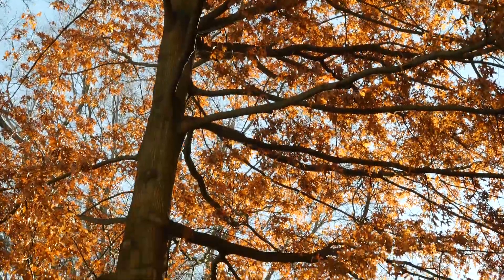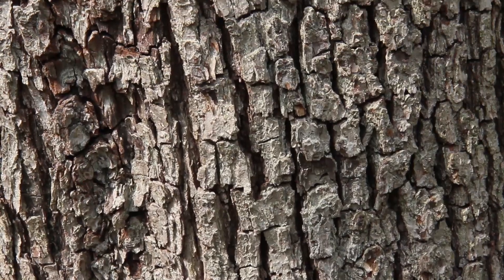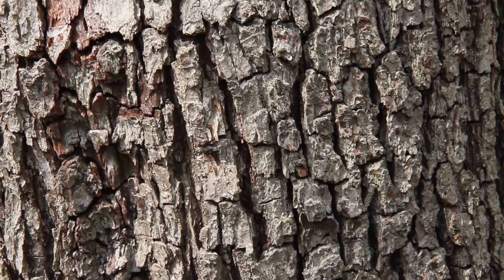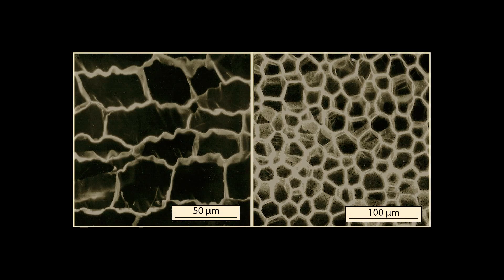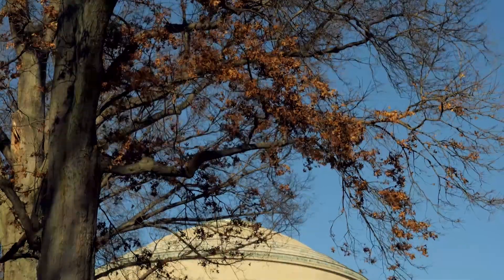Even as the trees at the Arnold Arboretum turn to brown, there's a hidden architecture hard at work in every plant. Plant tissues, like wood and palm and bamboo, have a cellular structure that makes them stiff and strong for their weight. By understanding the structural features responsible for this, we can design engineering materials inspired by nature.